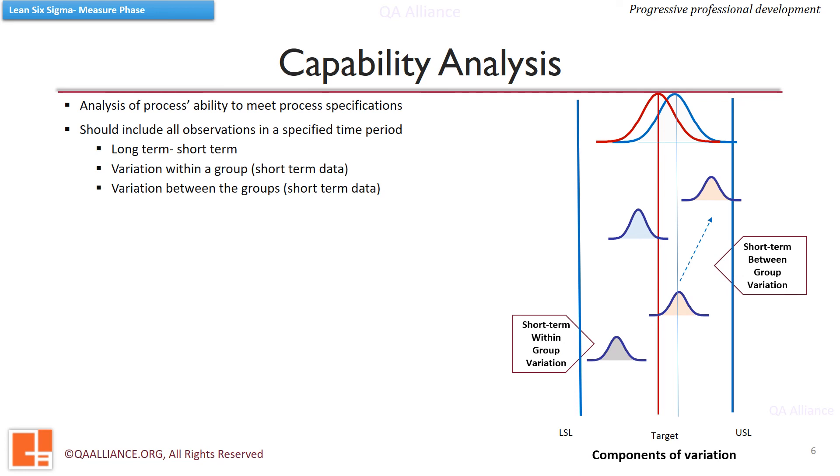It is very important to understand and analyze both type of data. When we are doing capability analysis, first requirement is that the process should be stable. If not, we first need to eliminate the special causes, make the process stable, and then perform capability analysis.